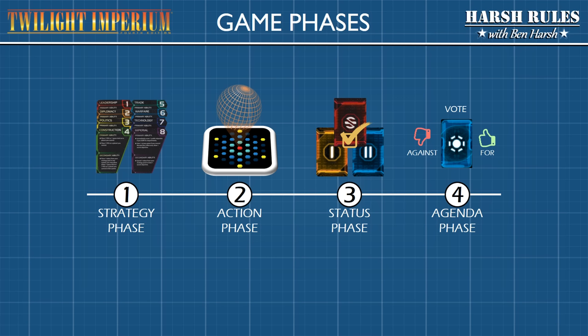Now let's take a look at Twilight Imperium's phases of gameplay. A round of gameplay in Twilight Imperium is divided into four game phases. First up is the strategy phase. In this phase, players choose a strategy card, each of which supports a particular gameplay objective and defines the order of play during the game round. Next is the action phase. During this phase, players move units, resolve combat, and execute actions on their strategy cards. This is followed by the status phase.